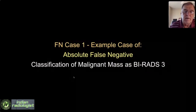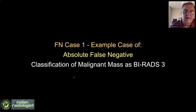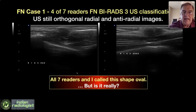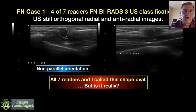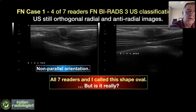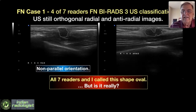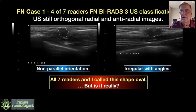False negative case 1 — an absolute false negative, meaning readers called this BIRADS-3 when it was malignant. Here are the orthogonal views of the mass. All seven readers and I called this shape oval. I don't know what I was thinking — because when I look at this, there is no way it should be called oval. Oval shapes should have a parallel orientation; if it's non-parallel, you can't call it oval. Clearly on the radial view this is not parallel, and even in the anti-radial view, we were just sloppy. We all blew it — we shouldn't have called this oval shape at all.